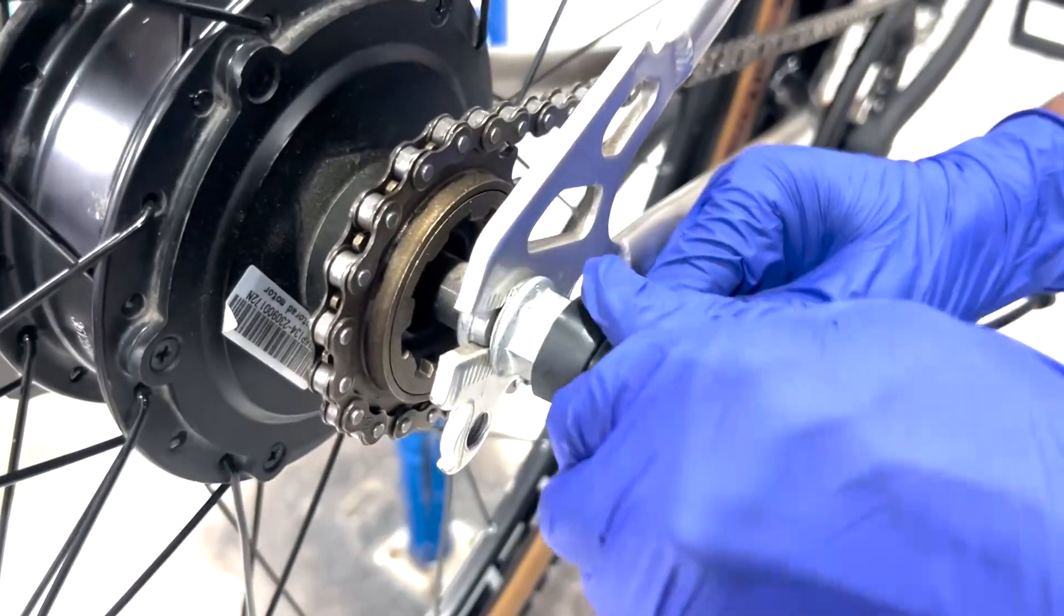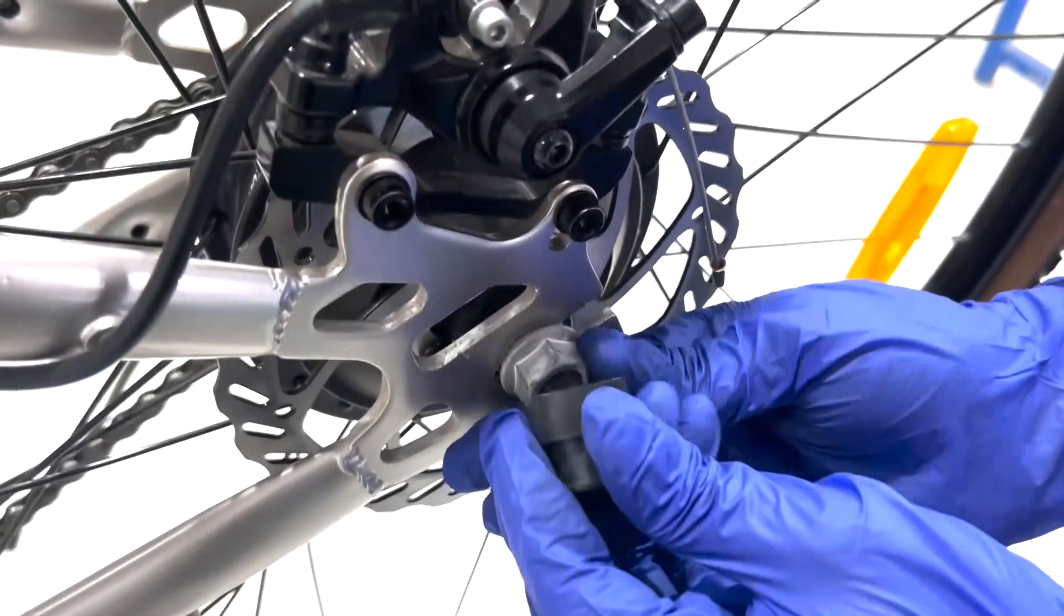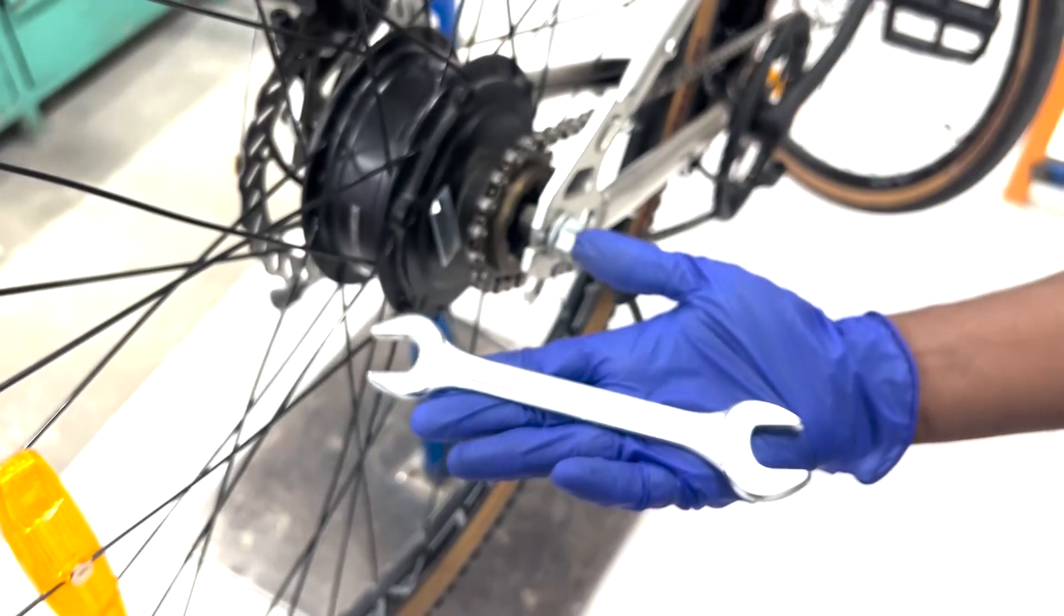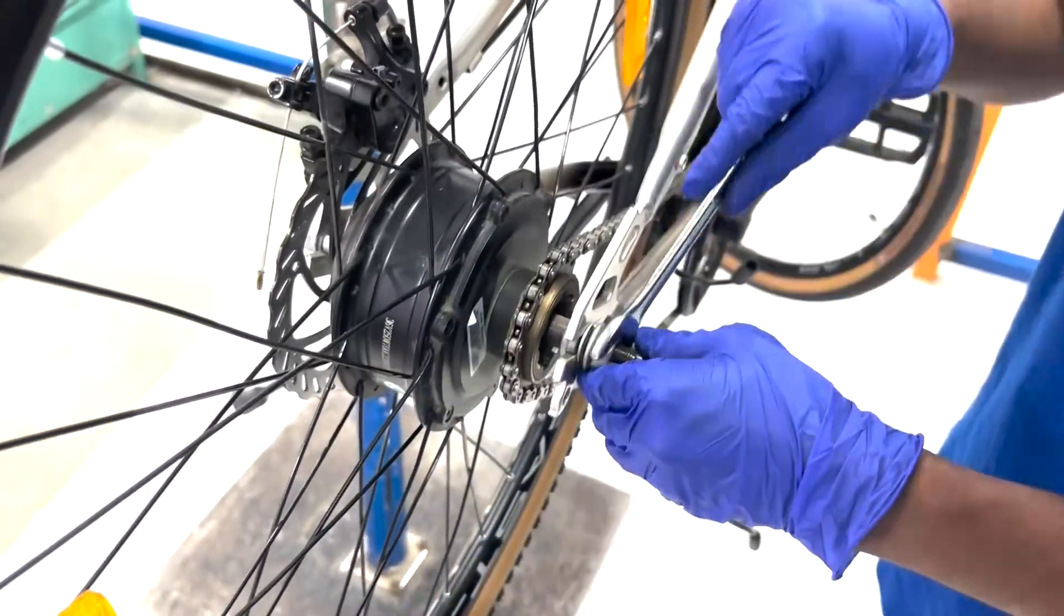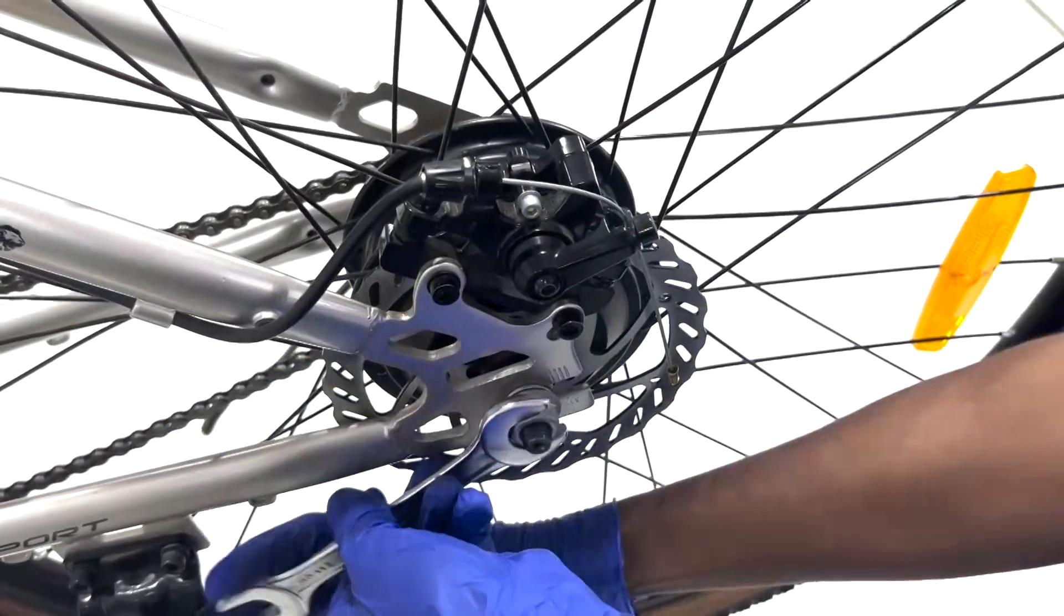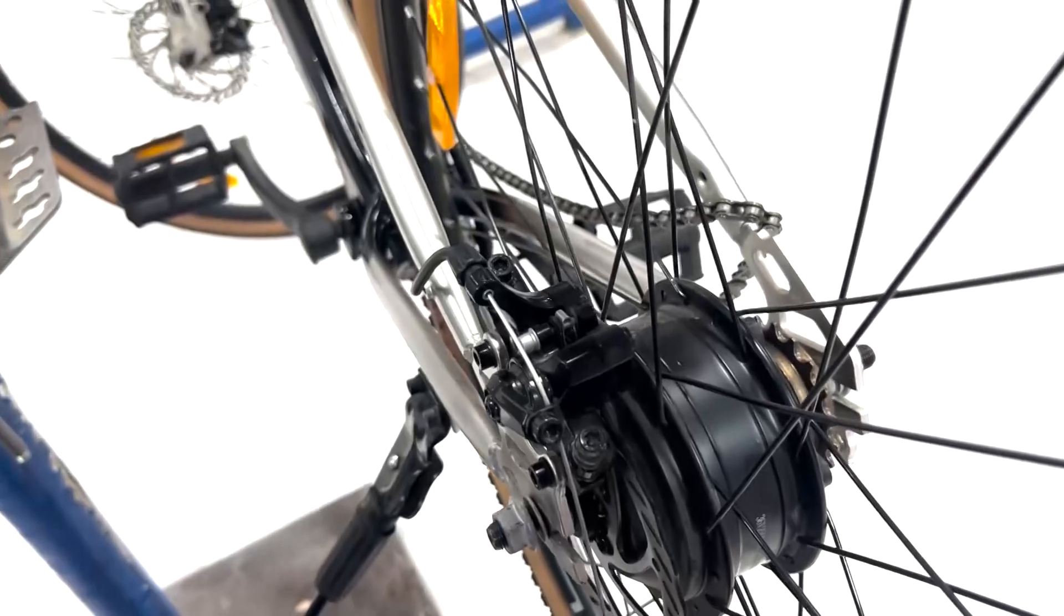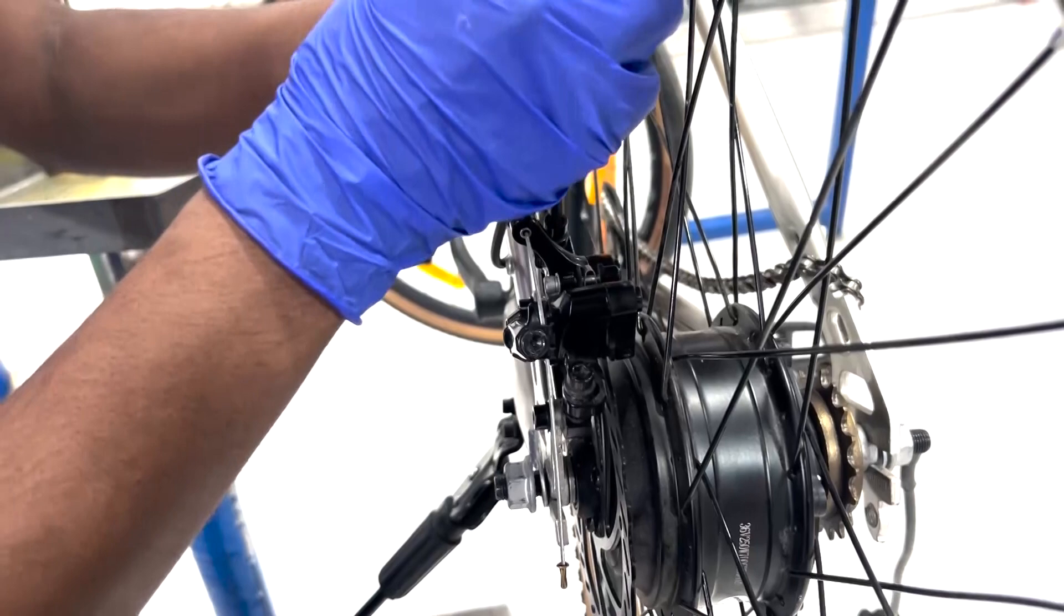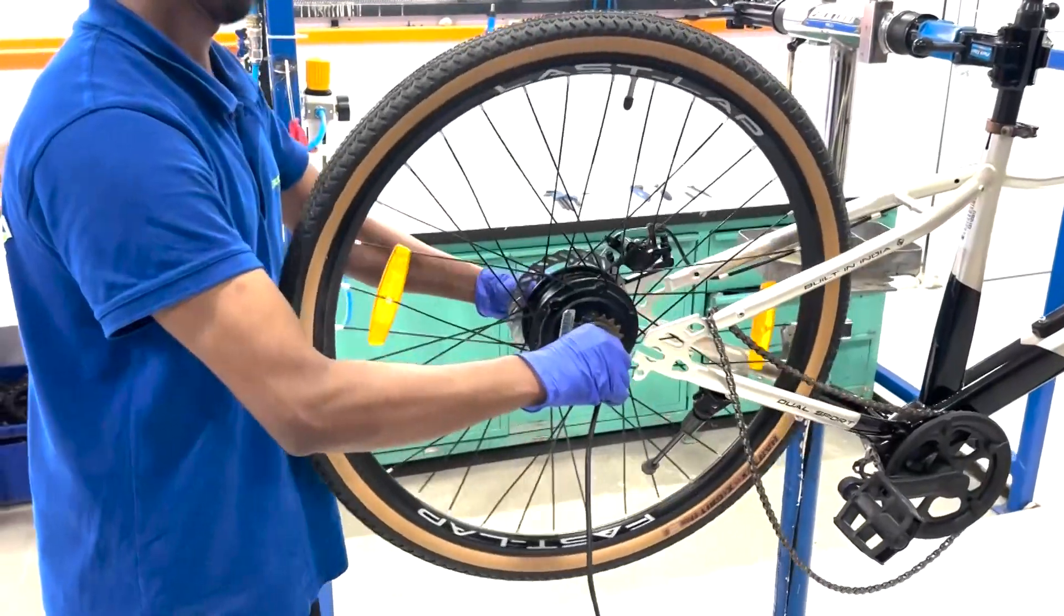Then, remove the rear wheel to access the controller and battery components inside the down tube. Start by taking off both side axle rubber caps and loosen the axle nut using an 18mm spanner. Remove the chain from the rear freewheel and loosen the rear brake caliper mounting bolts for easier wheel removal. Carefully remove the wheel from the frame.